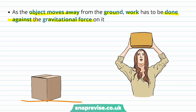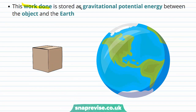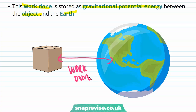For our object on the ground, there's a certain gravitational force Fg acting on it towards the ground. In order to lift this box to height H, work must be done against the gravitational force. This work done is stored as gravitational potential energy between the object and the Earth — the work done on the box to lift it up is stored as gravitational potential energy, which we're going to call GPE.